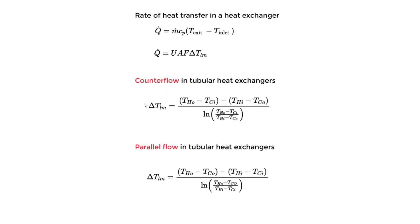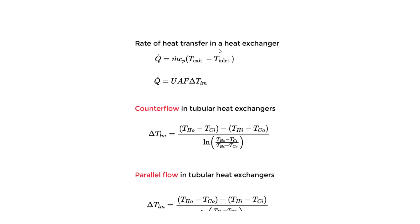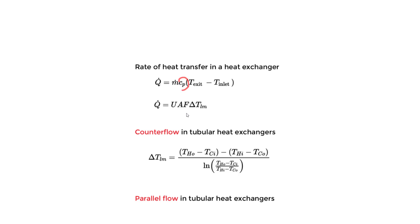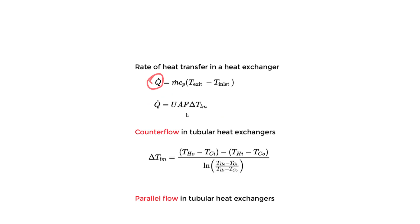Using equations from the handbook: the rate of heat transfer in a heat exchanger is Q dot = M dot × CP × (T_exit − T_inlet). There is also another equation for heat transfer rate involving the area: Q dot = U × A × F × ΔT_LM. We'll find Q for water using the first equation, then plug it into the second equation to find the area. F will be assumed to be 1.